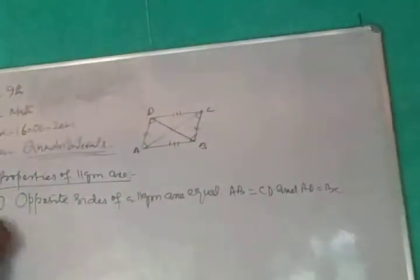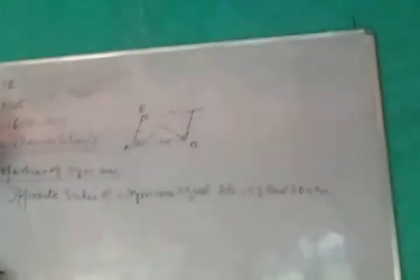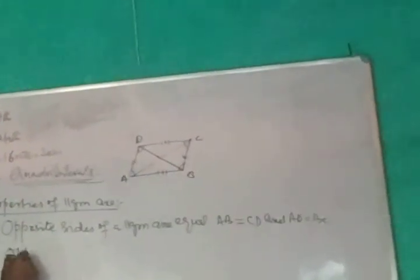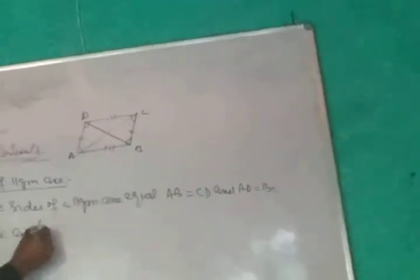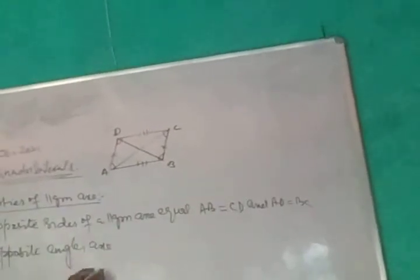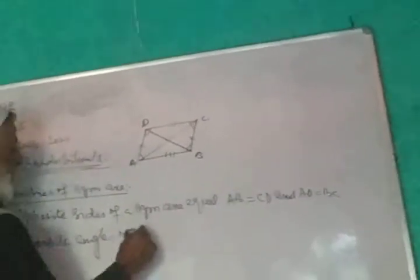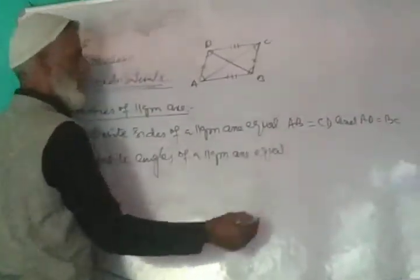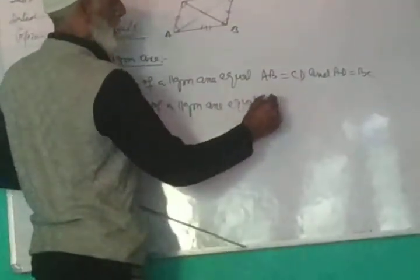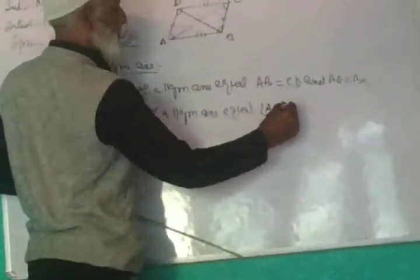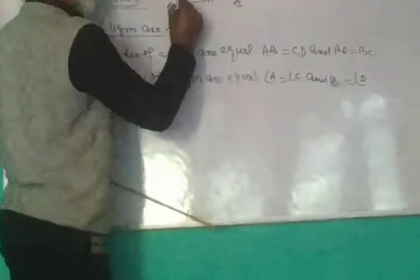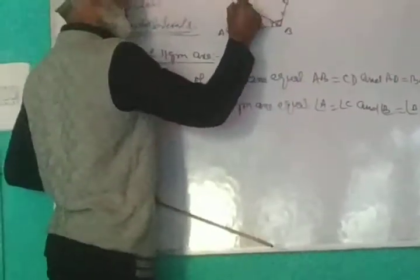Property number 2: opposite angles are equal. In a parallelogram, angle A is equal to angle C, and angle B is equal to angle D. This angle is equal to this angle, and this angle is equal to this angle.